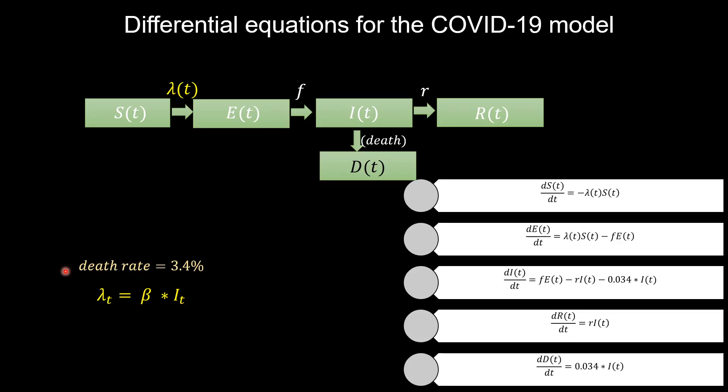Now that we're familiar with the SEIR model, we can easily modify it to fit the current situation for the coronavirus. The death rate is estimated to be at about 3.4% as of March 2020, so we'll add that to the model as the death rate.